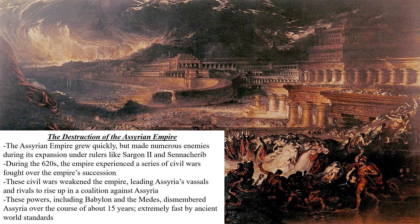These civil wars greatly weakened the empire, leading Assyria's vassals and rivals to rise up in a coalition against Assyria. These powers, including Babylon and the Medes, dismembered Assyria over the course of about 15 years, which is really extremely fast by ancient world standards.